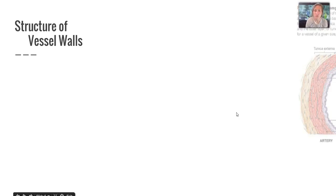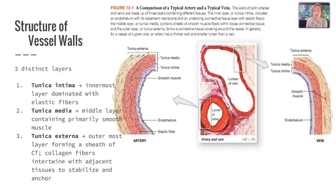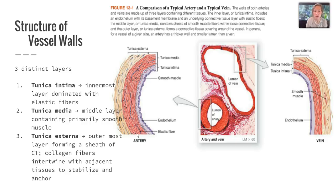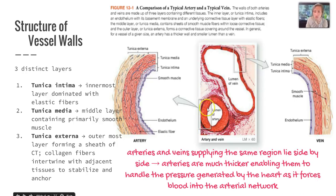Now we're going to talk more about the structure of both veins and arteries — their walls specifically — and there are three distinct layers. The tunica intima is the innermost layer dominated by elastic fibers. The tunica media is the middle layer, which is primarily made up of smooth muscle tissue. Then your tunica externa is the outermost layer, forming a sheath of connective tissue along with collagen fibers that intertwine with adjacent tissues to stabilize the artery or vein. Arteries are much thicker than veins because they need to handle the pressure generated by the heart as it forces blood into the arterial network.